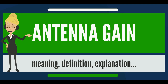An alternative definition compares the antenna to the power received by a lossless half-wave dipole antenna, in which case the units are written as dBd. Since a lossless dipole antenna has a gain of 2.15 dBi, the relation between these units is: gain in dBd equals gain in dBi minus 2.15 dB.